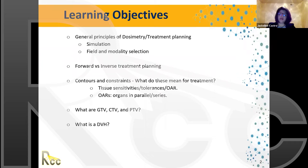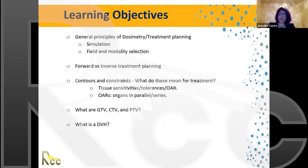Our learning objectives for today: first we'll go through general principles of dosimetry and treatment planning, then highlight how simulation is the first and one of the more important parts of planning. We'll cover field and modality selection, forward versus inverse treatment planning, contouring constraints, guidelines for contours, definitions of GTV, CTV, and PTV, and briefly cover DVH.